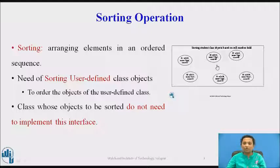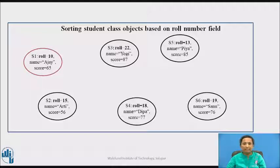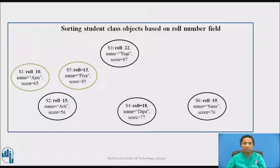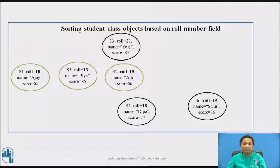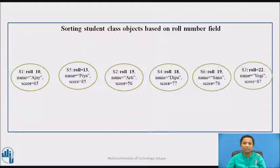Here we will see one example of sorting Student class objects based on the roll number field. Six student object instances are shown. Every instance has the fields roll number, name, and score. If we want to sort these objects based on roll number in ascending order, the sorted sequence would be: roll number 10, then 13, then 15, then 18, then 19, and then 22.